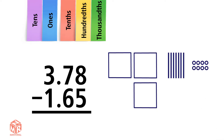We subtract from right to left, so we start with the hundredths. 8 minus 5 equals 3, so we write that in the hundredths column. Next, we subtract the tenths. 7 minus 6 equals 1. We bring down the decimal point.